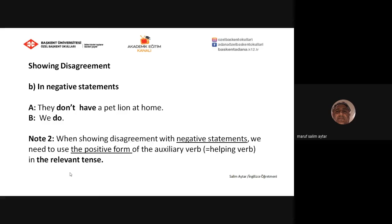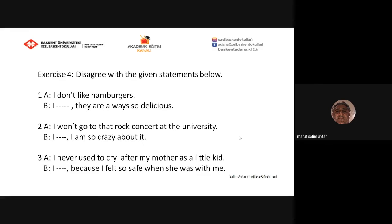Now we go on to showing disagreement, but this time with negative statements. Look at the example: 'They don't have a pet lion at home. We do.' So when showing disagreement with negative statements, we need to use the positive form of the auxiliary verb in the relevant tense. For example: 'I don't like hamburgers.' Since this is present simple in the negative form, you use the positive form of the helping verb.